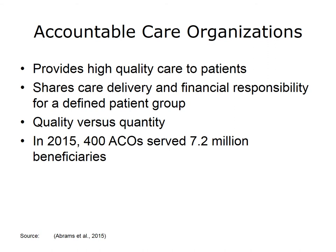As you can see from the definition on the screen, an Accountable Care Organization, or ACO, is a group of providers that are jointly responsible for the health care spending and quality of a particular population of patients. ACOs are a result of innovations included in the Affordable Care Act, and are responsible for providing high-quality coordinated care while sharing care delivery and financial responsibility for a defined patient group. In 2015, there were 400 ACOs serving 7.2 million beneficiaries. The concept of an ACO is a move toward a system that pays providers based on quality rather than quantity of care. There are different types of ACOs, and the early performance of ACOs has been mixed. We will begin by identifying key features of ACOs.